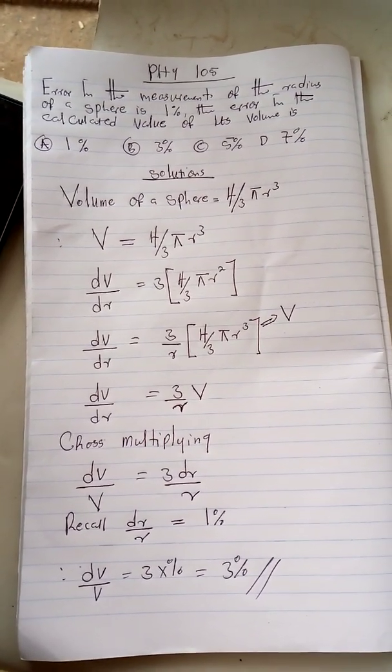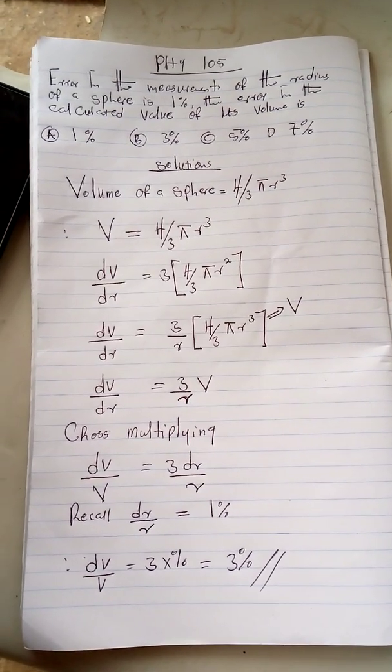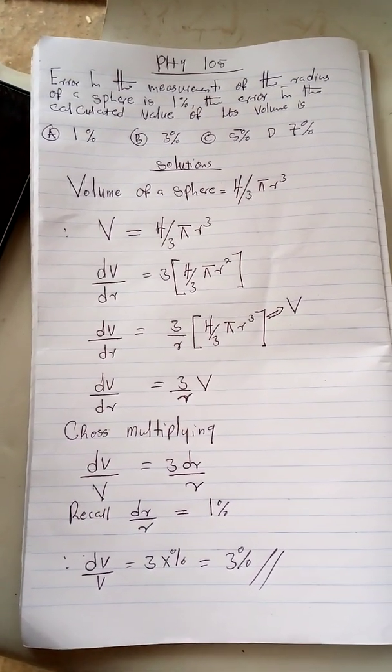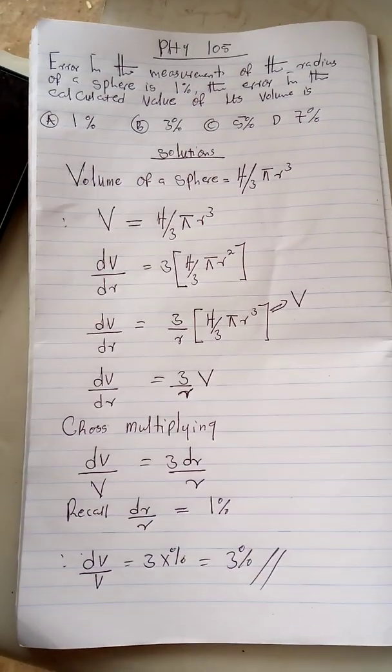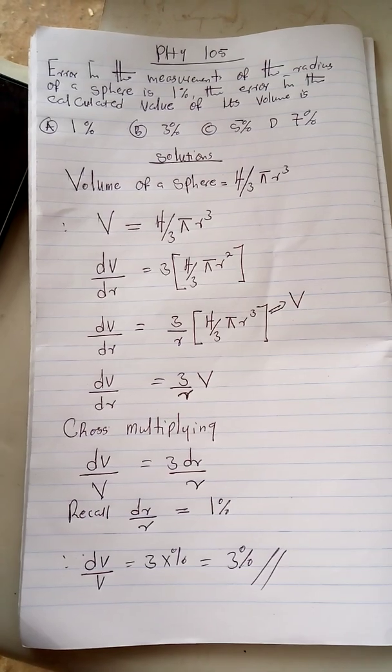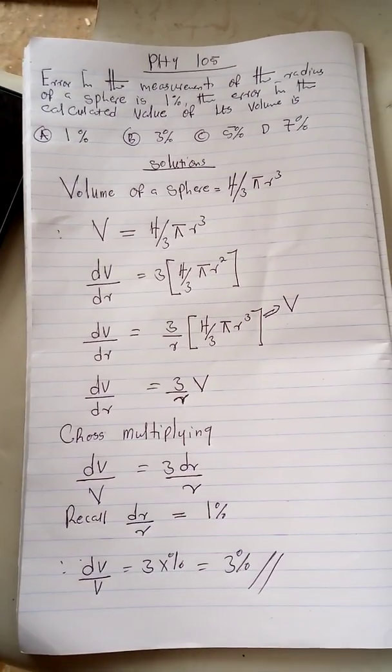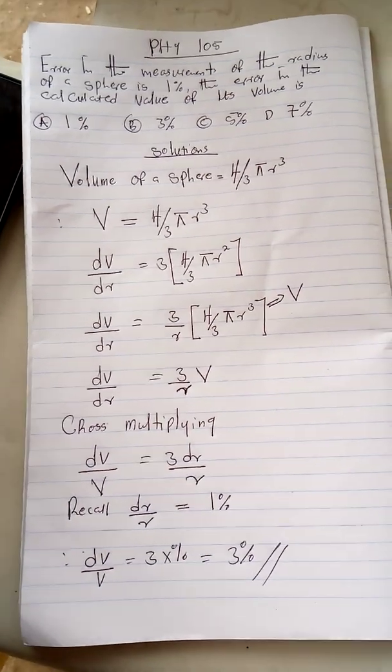You already know that 4 over 3 pi r cubed is still the same thing as volume. Now when you differentiate dV with respect to r, you have 3 over r multiply by V. I hope you understand.